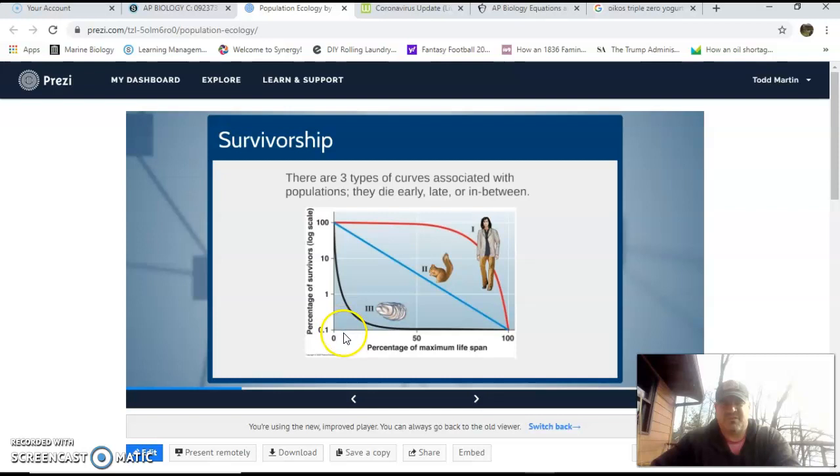So 10% of their lifespan, a good number of them are still around, but they die off really quickly. Most of them die off very early in life, where by the time that you get to about half the lifespan for the expected lifespan for one of these things, there's only about 0.1% of the entire population left. So basically, you got to think about organisms that have a ton of offspring in which most of them don't make it. Think insects.